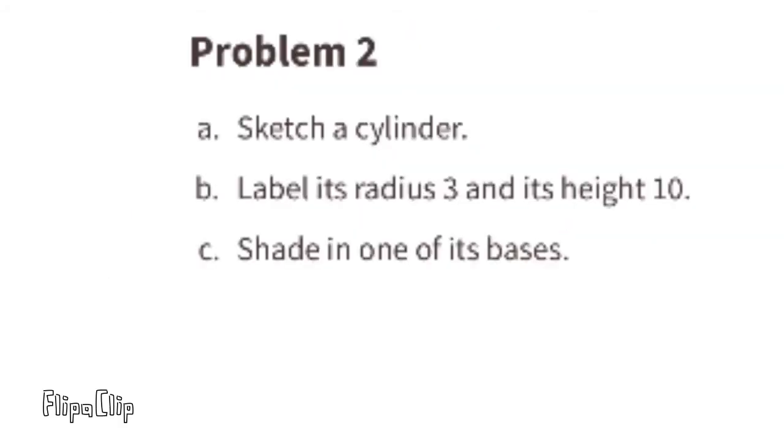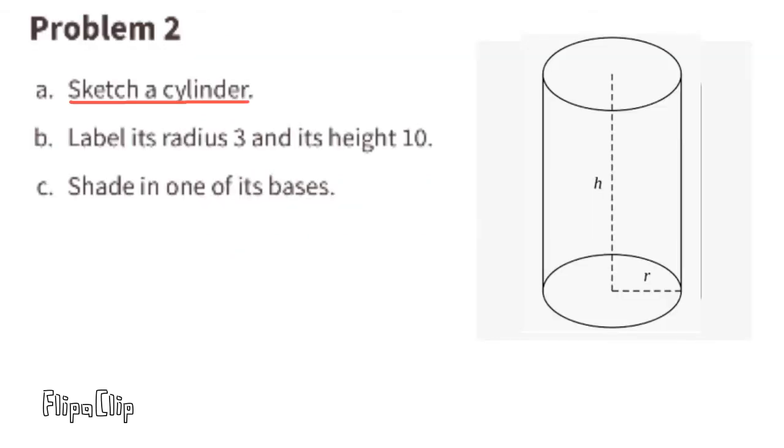Problem number 2. A. Sketch a cylinder. B. Label its radius 3, and its height 10. C. Shade in one of its bases.